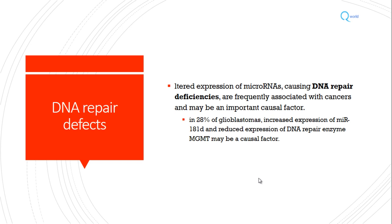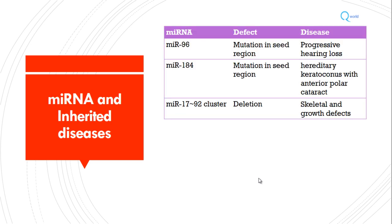Micro RNA dysregulation can cause cancer by many ways, and one major pathway is DNA repair defects. Altered expression of micro RNA can cause DNA repair deficiency, which can be an important causal factor in disease. For example, 28% of glioblastomas have increased expression of a micro RNA called miR-181, and this is associated with a defect in the DNA repair enzyme MGMT. Mutations or deletions in micro RNA regions can also lead to inherited diseases like progressive hearing loss, hereditary keratoconus with cataract, antipolar cataract, and skeletal and growth defects.